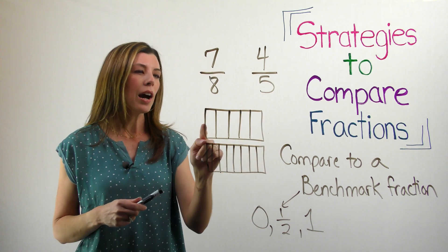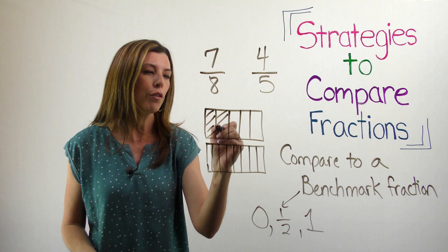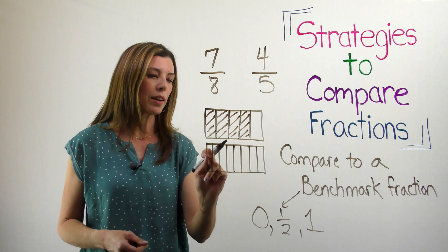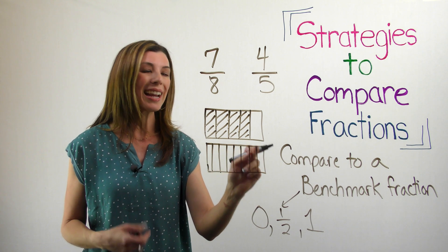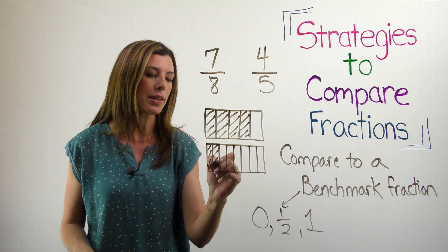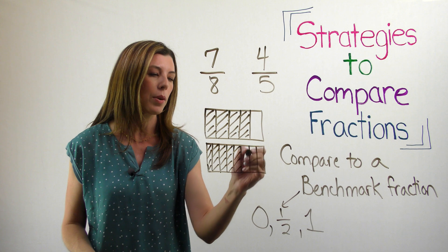So here I've got one, two, three, four, five. So I've got fifths and I'm going to go ahead and shade in four copies of one-fifth. And on this case, I have one, two, three, four, five, six, seven, eight. So I have eighths and I'm going to shade in seven copies of one-eighth or seven slices of one-eighth, if I want to think about it that way.